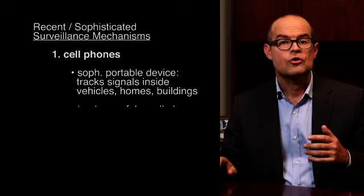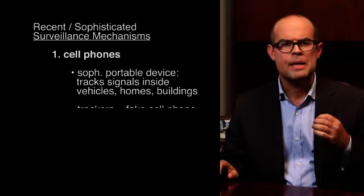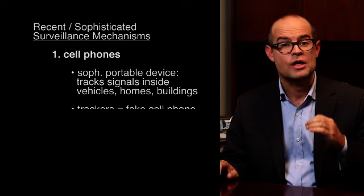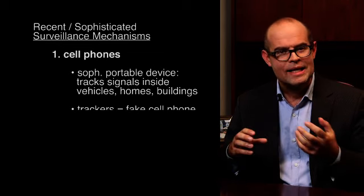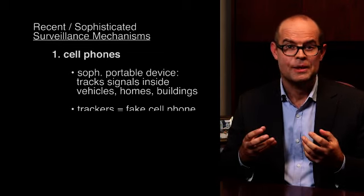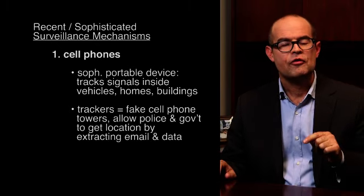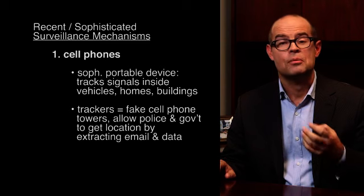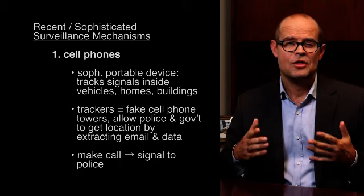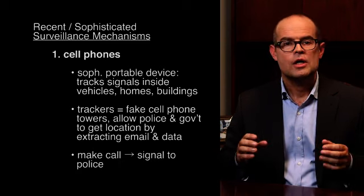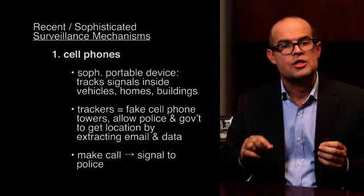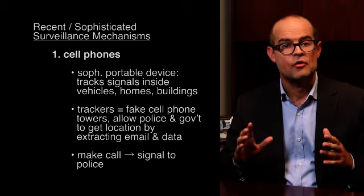allowing police or other government investigators to pinpoint the location of a targeted cell phone by extracting email and other data from it. When a suspect makes a call, the device tricks the phone into sending its signal back to the police, which is OK if the user is a criminal. However, the device also extracts data off thousands of other cell phones in the area.